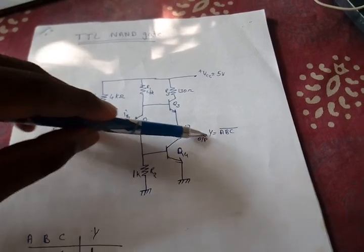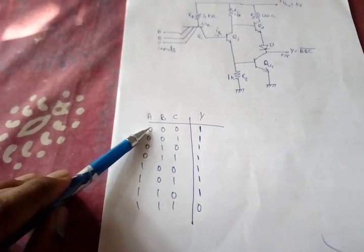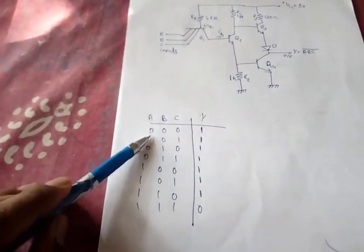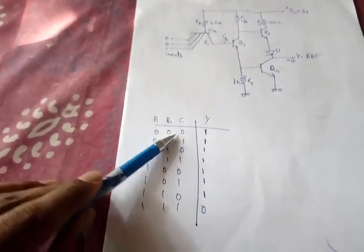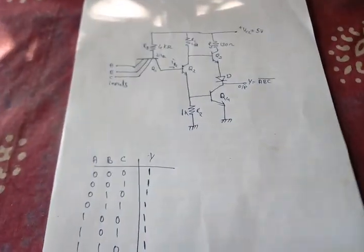Current will flow through the output. Then Y will be one. That is, when some or all inputs are zero, the output is one. That is the case we discussed now.